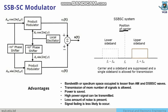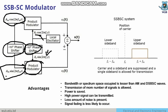In the SSBSC system, the carrier position is always suppressed. There is a product modulator and a carrier modulator. After a 90-degree phase shifter, the cosine signal is shifted to a sine signal, which goes into another product modulator. The AF signal also goes through a 90-degree phase shifter, and both outputs S1 and S2 are summed with a local oscillator to get the total modulated voltage.